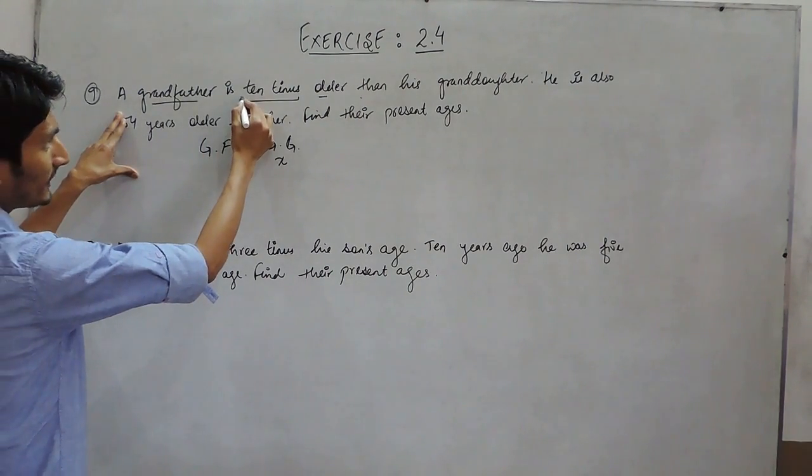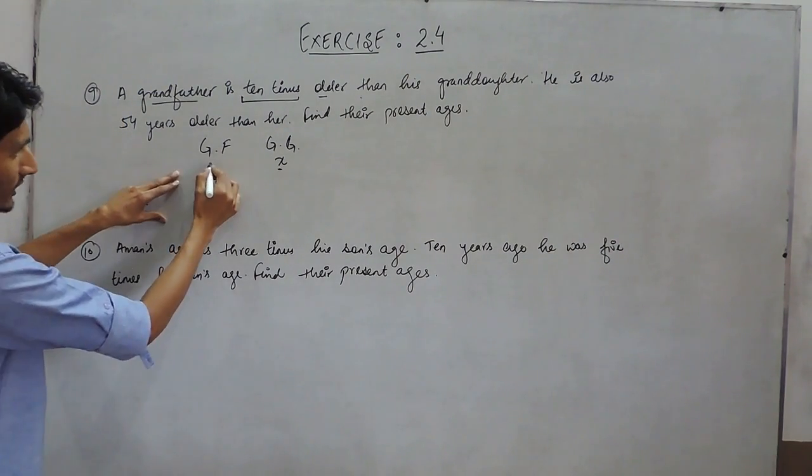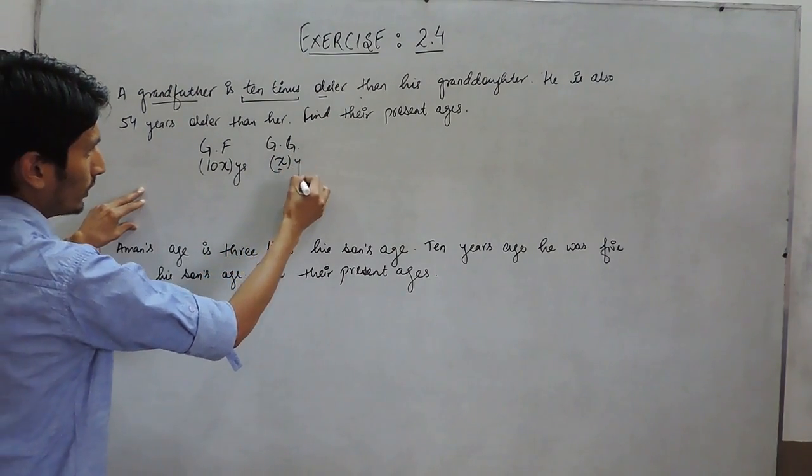so the grandfather's age must be 10 times of what is granddaughter's age. So the grandfather must be 10x years old.